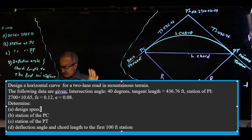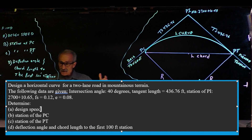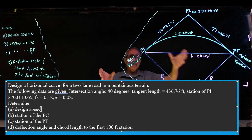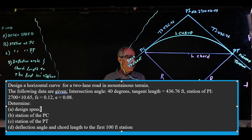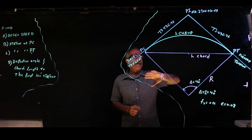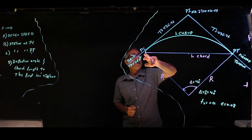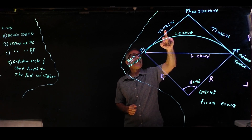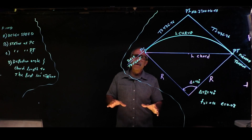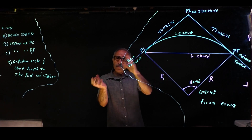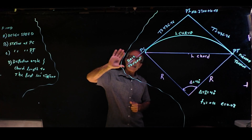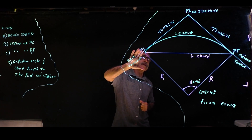The problem states we have a horizontal curve to be designed for a two-lane road in a mountain area, and they give us the following information. I made a sketch so you can understand the problem a little bit better. The PI station is at 2700 plus 10.65, and the length of the tangent given to us is 436.76. Remember, when you get the problem you won't get the sketch — you have to put things together.